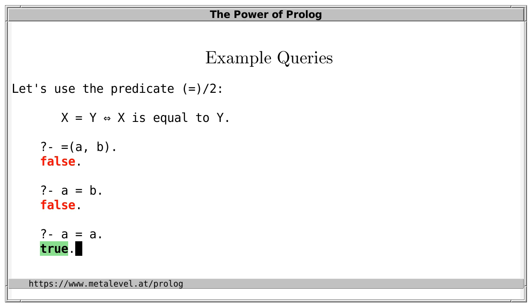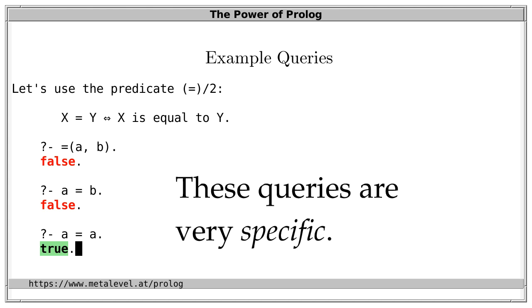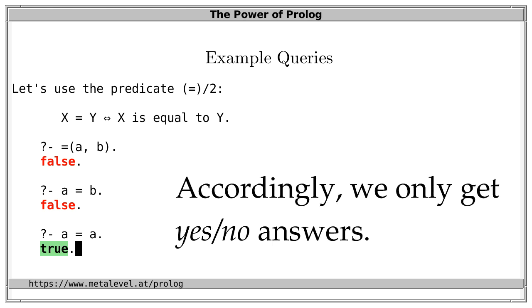So we have manually found arguments for which the predicate is true. However, there is a more systematic and also more convenient way to find cases that hold — and that is to let Prolog find solutions for us. That's the entire point of programming in Prolog: Prolog should find solutions for us, or tell us that no solutions exist. These specific queries specify everything, so the only logical answers are no it doesn't hold, or yes it holds.